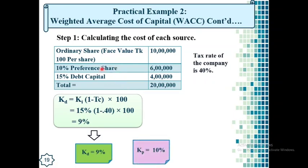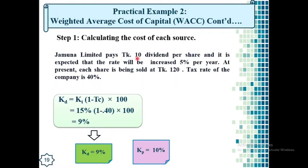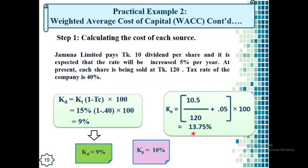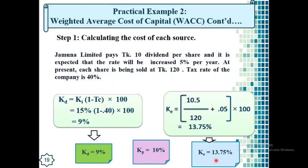The cost of preference share is directly given as 10%. For cost of equity, since Jomuna Limited pays Taka 10 dividend per share with a 5% growth rate and current price of Taka 120, we use the constant dividend growth rate model. The current dividend is given, so we calculate the expected dividend: 10 × 1.05 = Taka 10.5. Putting values in the formula, the cost of equity is 13.75%. So: cost of debt = 9%, cost of preference share = 10%, cost of equity = 13.75%.